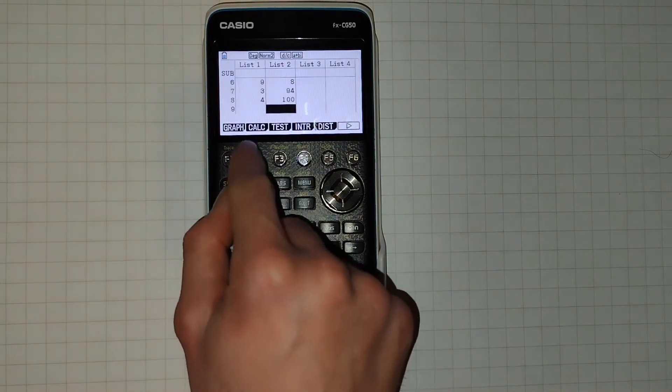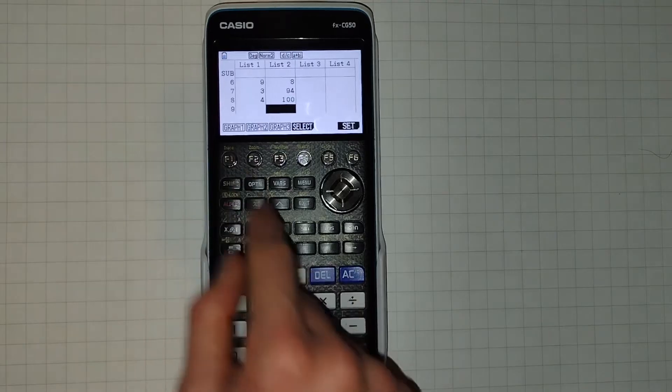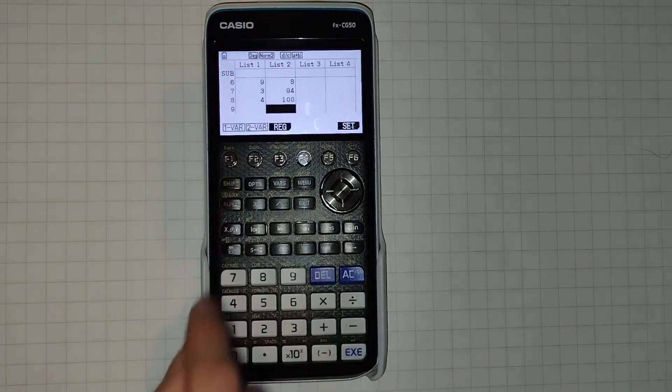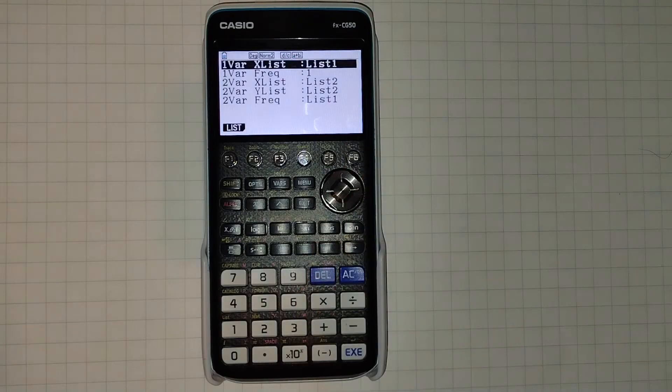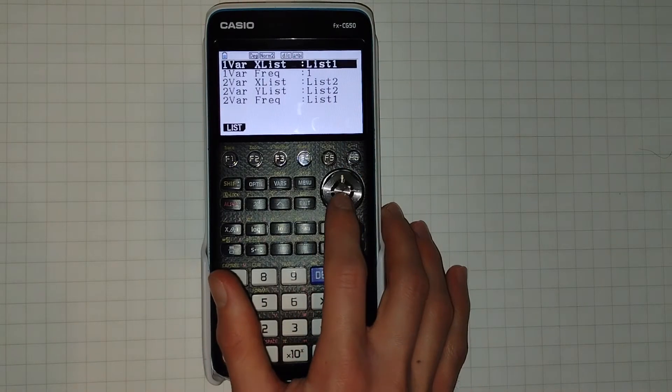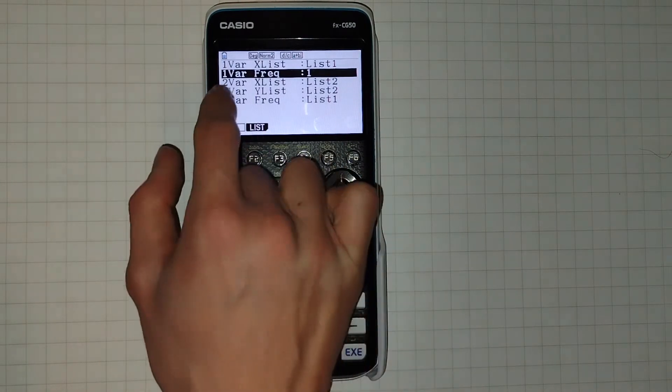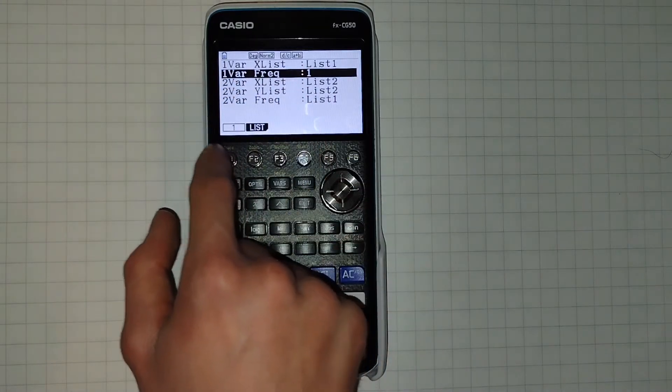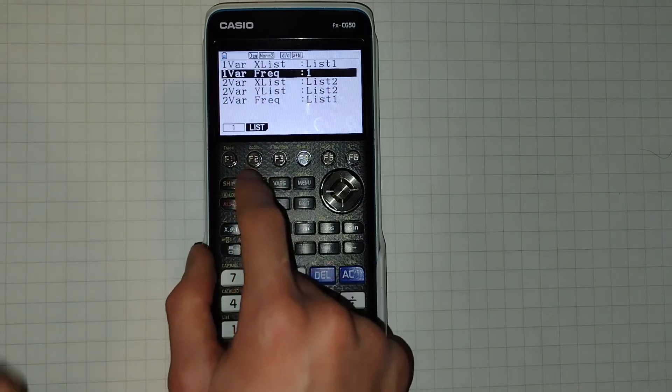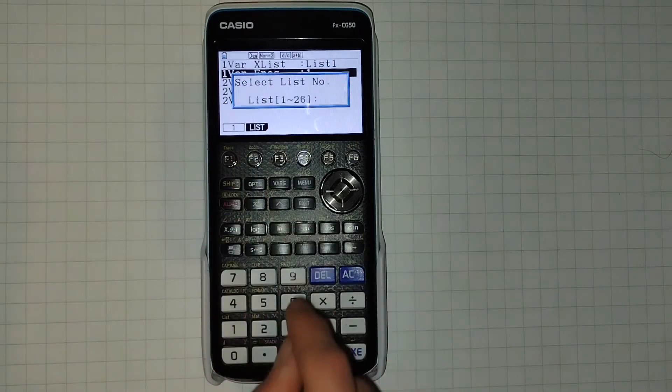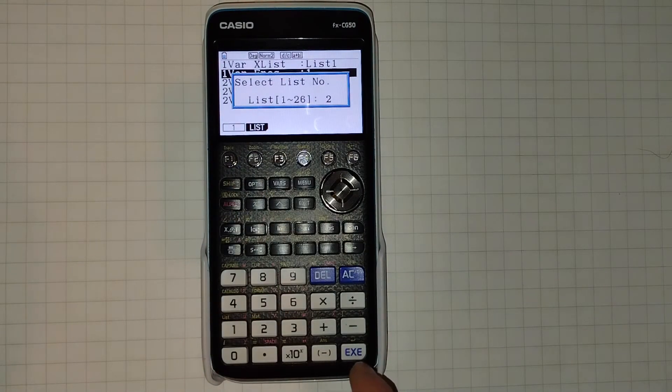We can then click, once you've exited the graph menu, you can then click F2 to go back into your calc mode, and then F6 for set. Here, by scrolling down, we can set our one-variable frequency. By default, it is 1, so each of our data values will have a frequency of 1.